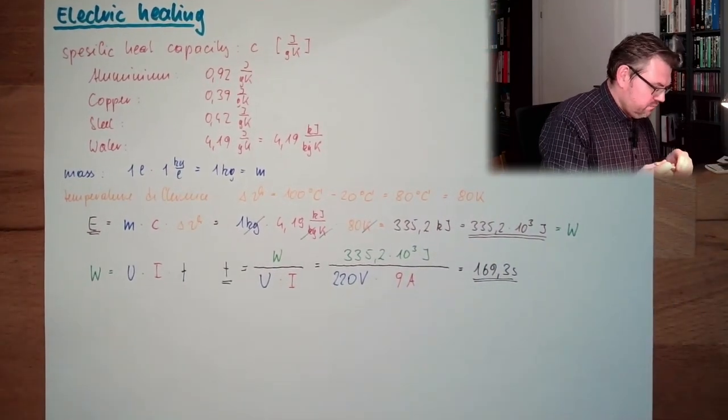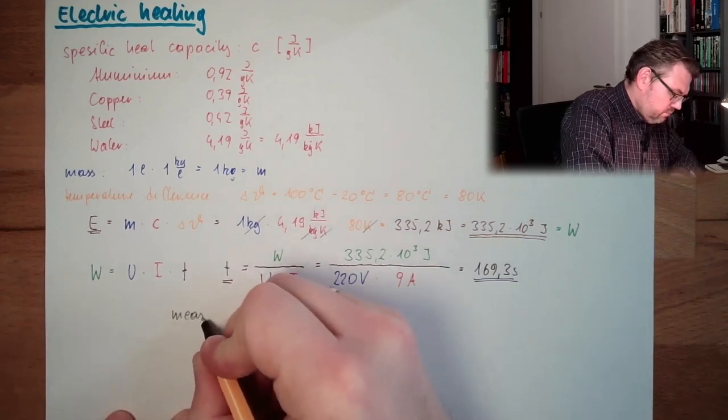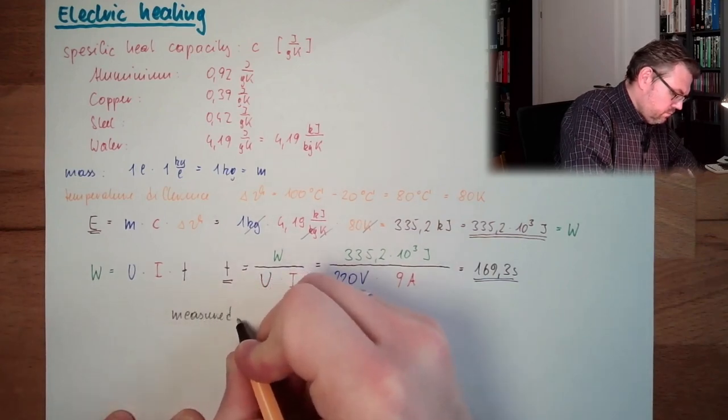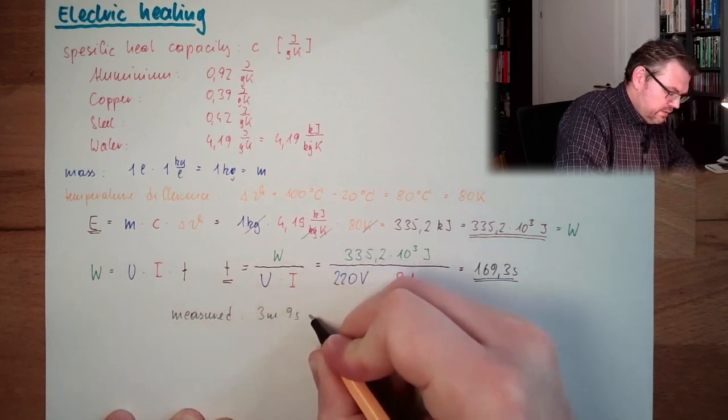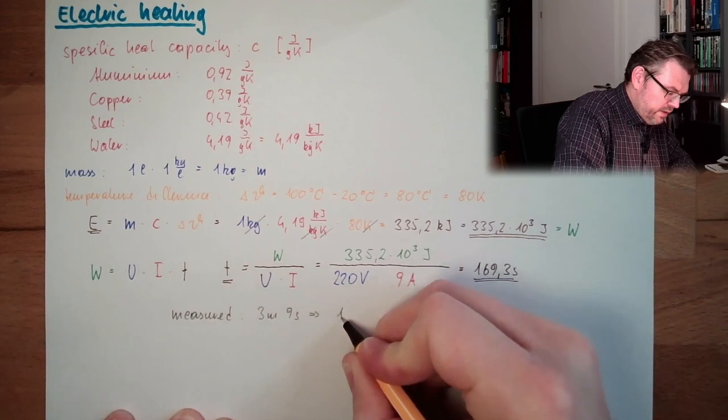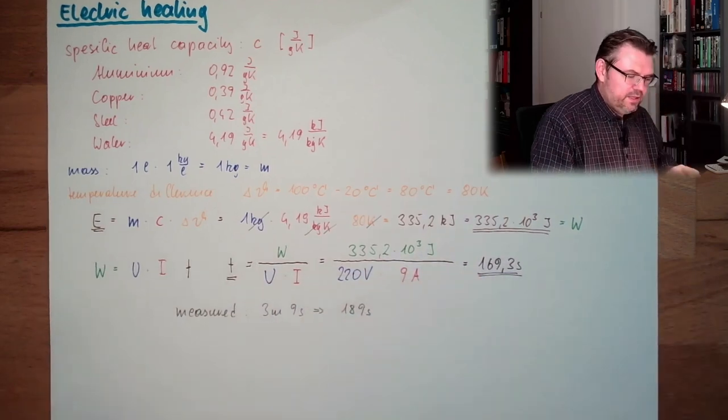Three minutes nine seconds. So we have 180, 189 seconds. There's a difference of 20 seconds. Why is this difference?